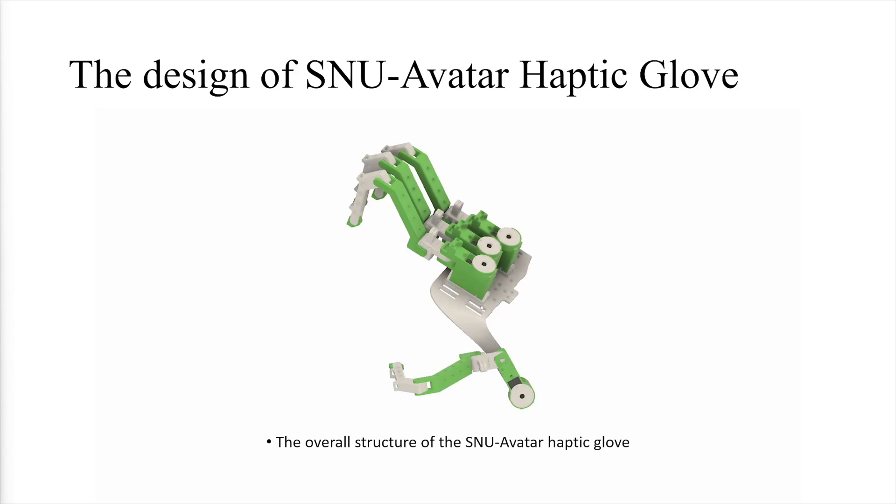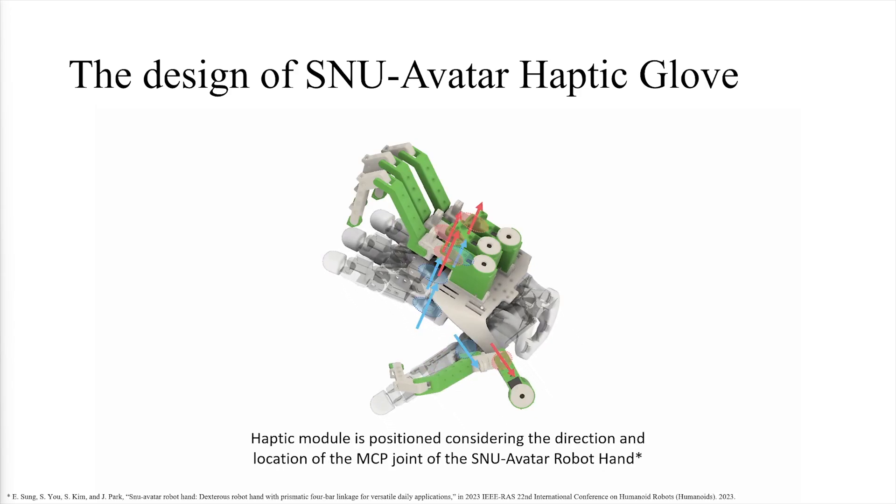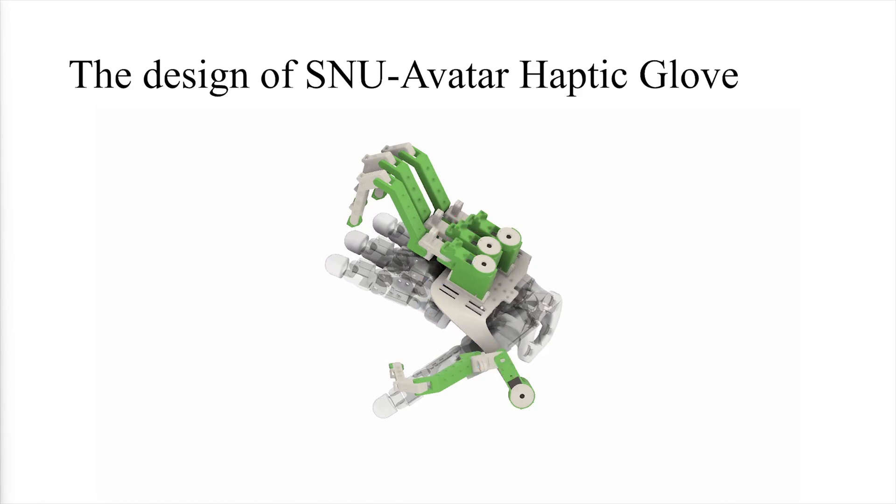The haptic module is specifically positioned by considering the direction and location of the MCP joint. By aligning the haptic module with the MCP joint, we ensure that it is more closely integrated with the natural movement of the robot hand, ultimately enhancing the user's control and interaction with the remote environment.